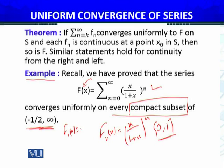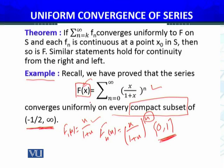For example, f1 is x over (1 + x) with n to the power 1, and this is continuous. f2 is also continuous, and so on, because the denominator equals zero only at x = −1, and x = −1 is not in this compact subset or in the domain. So all these functions are continuous on that particular compact subset.